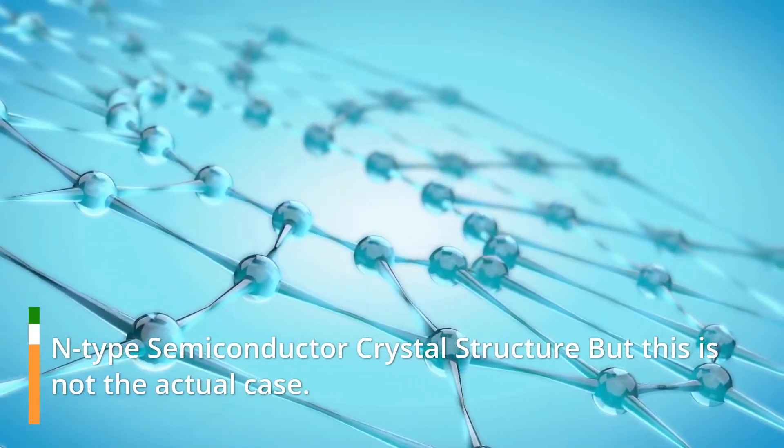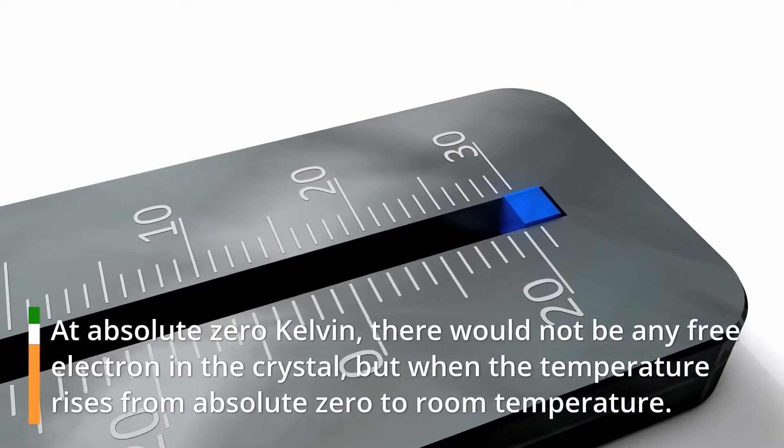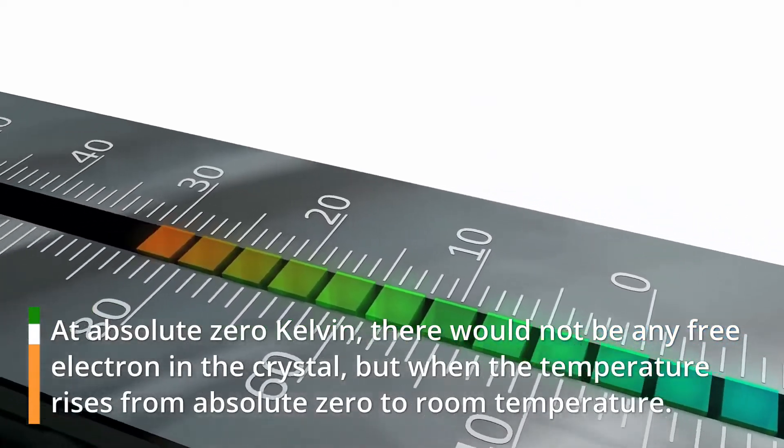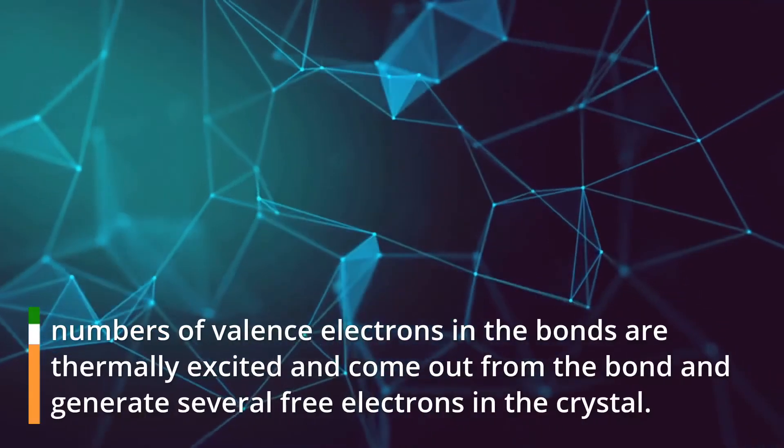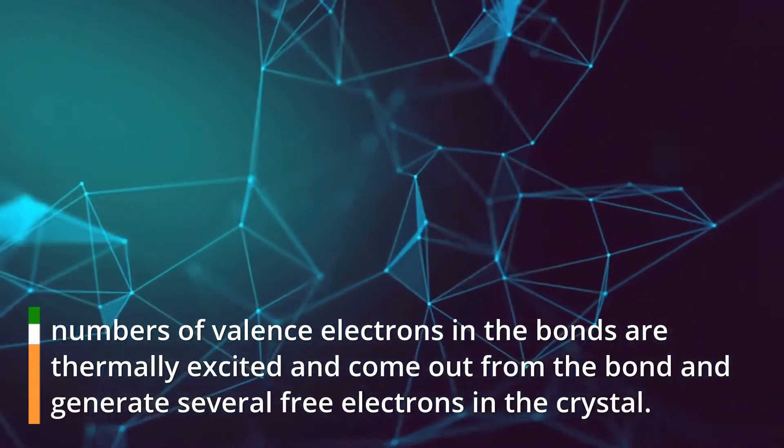N-Type Semiconductor Crystal Structure. But this is not the actual case. At absolute zero Kelvin, there would not be any free electron in the crystal, but when the temperature rises from absolute zero to room temperature, numbers of valence electrons in the bonds are thermally excited and come out from the bond, generating several free electrons in the crystal.